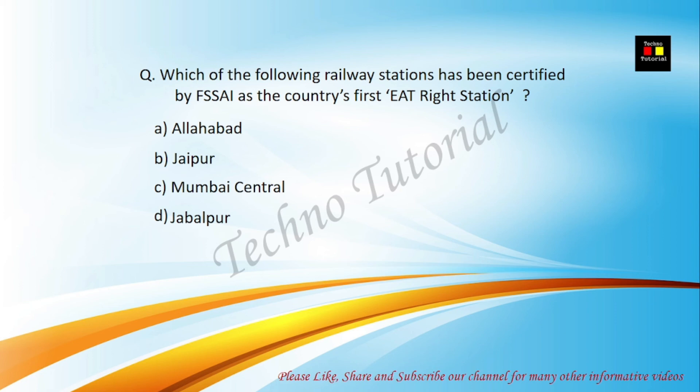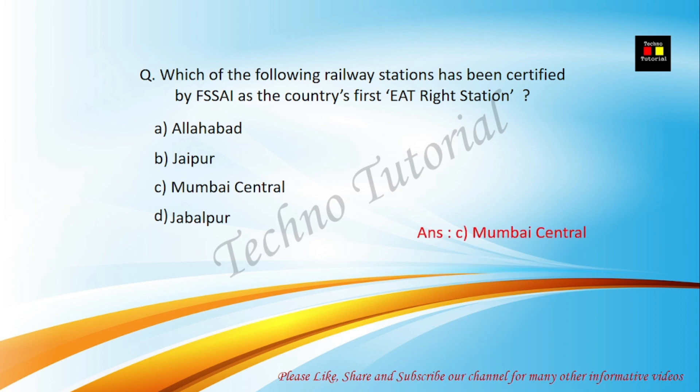Which of the following railway stations has been certified by FSSAI as the country's first Eat Right station? Options are Allahabad, Jaisalmer, Mumbai Central, and Jabalpur. The correct answer is C — Mumbai Central.